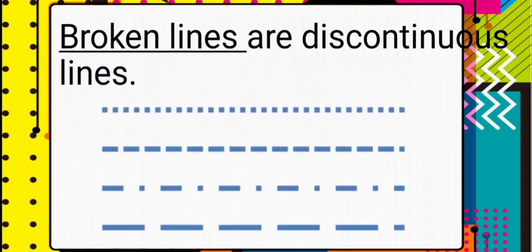Our next line is the broken line. Broken lines are discontinuous lines. Here is our example of broken lines.